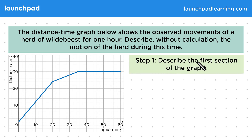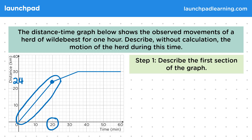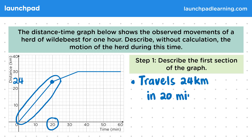For step one, describe the first section of the graph. This first section starts at the origin and ends at the point where the distance is 24 and the time is 20. So we can describe this section by saying that the herd travels 24 kilometres in 20 minutes. Notice that we used kilometres and minutes instead of metres and seconds, as these are the units given on the axes of the graph — we might have lost marks if we didn't notice this.